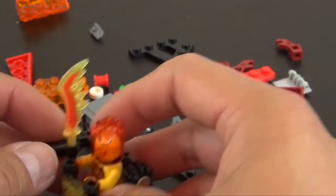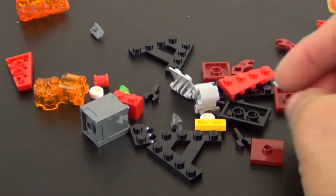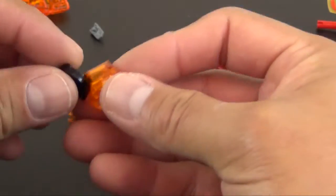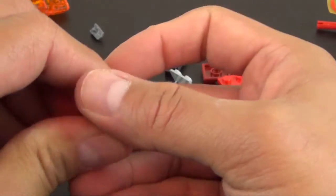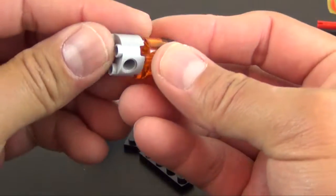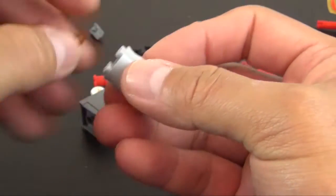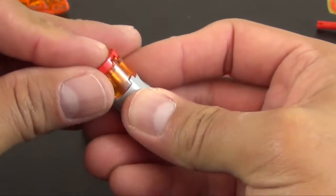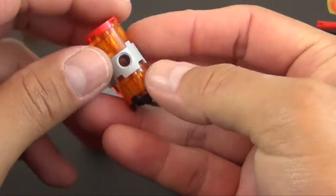All right. Not quite done yet. We're going to build a little hammer piece. So we take these trans-orange two-by-two round. Attach all that. There's a printed flame tile.